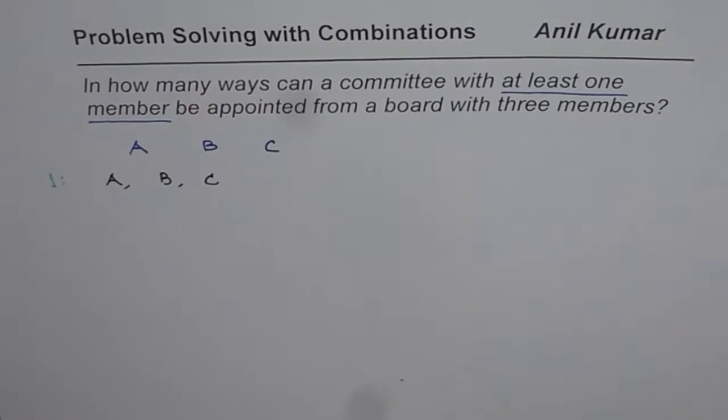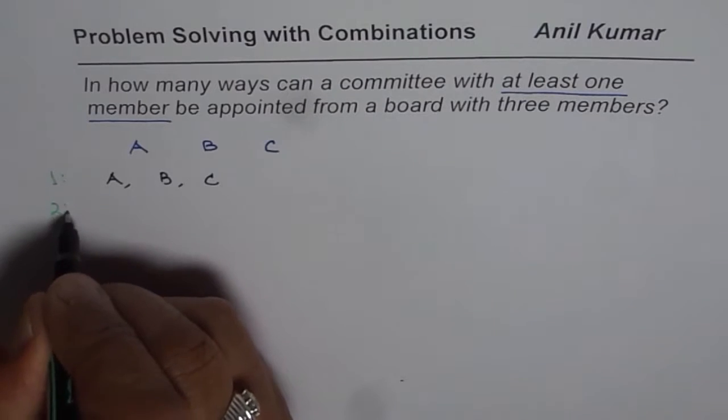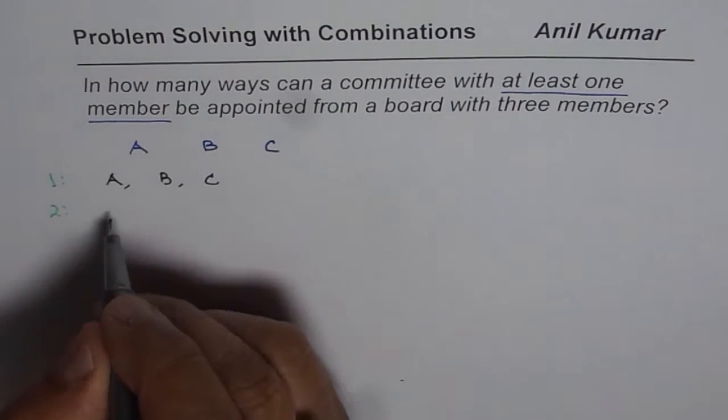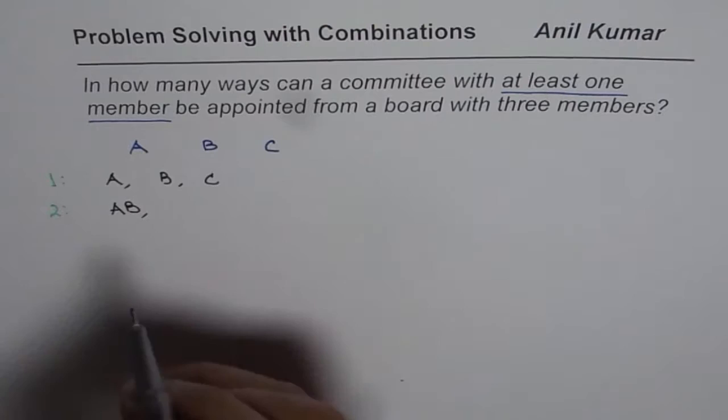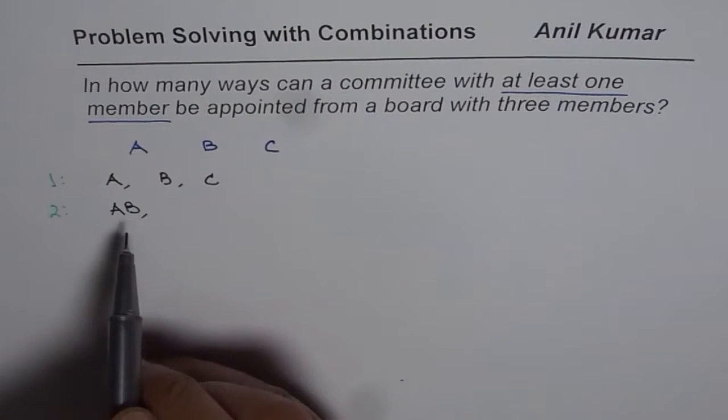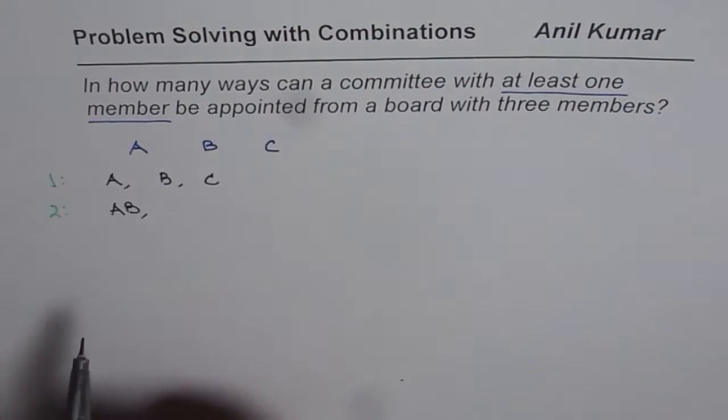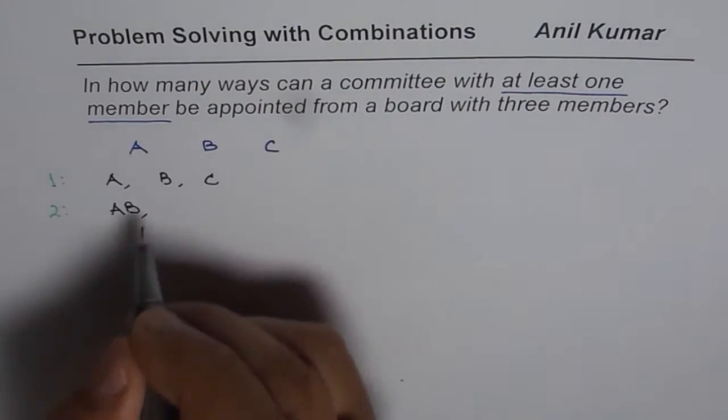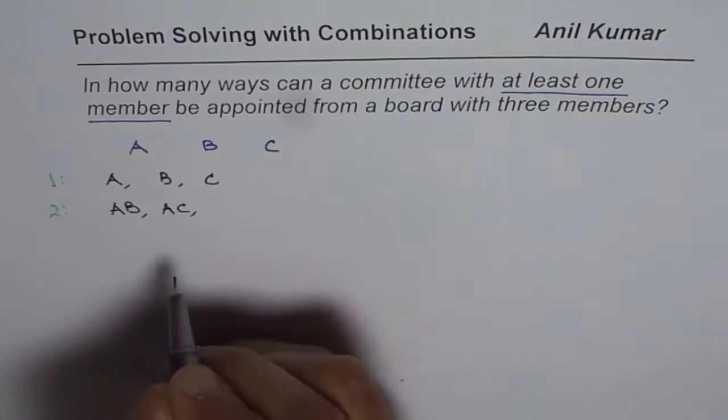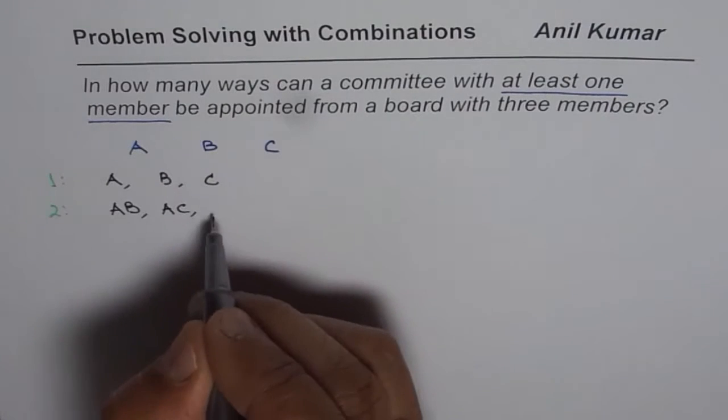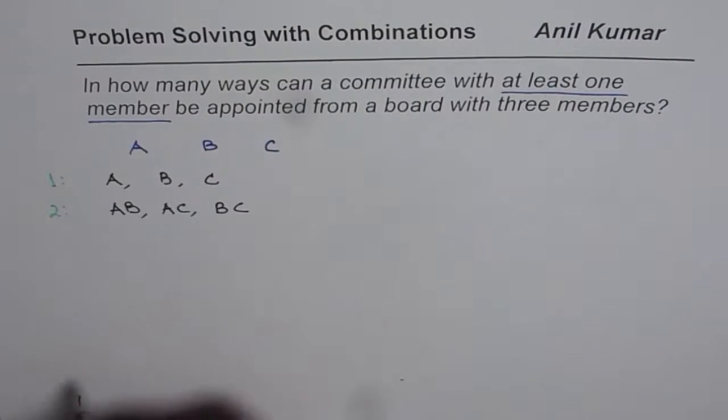If we take two at a time in a committee then the combinations could be A will go with B. Now B and A, and A and B is one of the same thing and that's why it's case of combination. Or A could go with C and then we could have B and C.